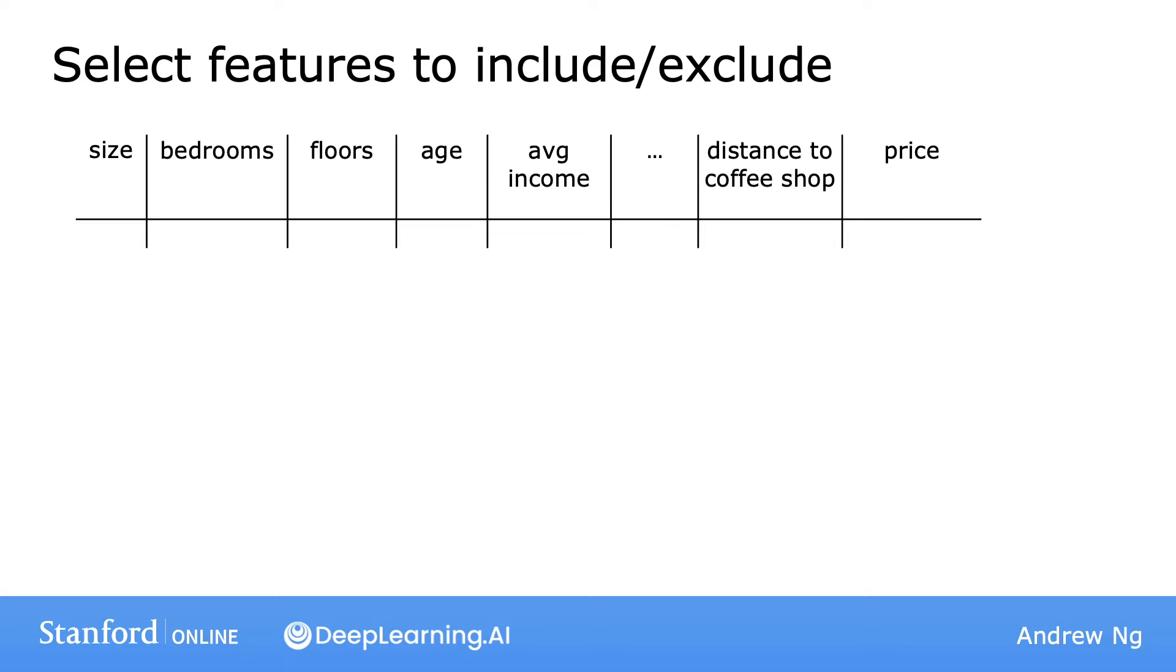A second option for addressing overfitting is to see if you can use fewer features. In the previous video, our model's features included the size x, the size squared x squared, and x cubed, and x to the 4, and so on. These were a lot of polynomial features. So in that case, one way to reduce overfitting is to just not use so many of these polynomial features. But now let's look at a different example.